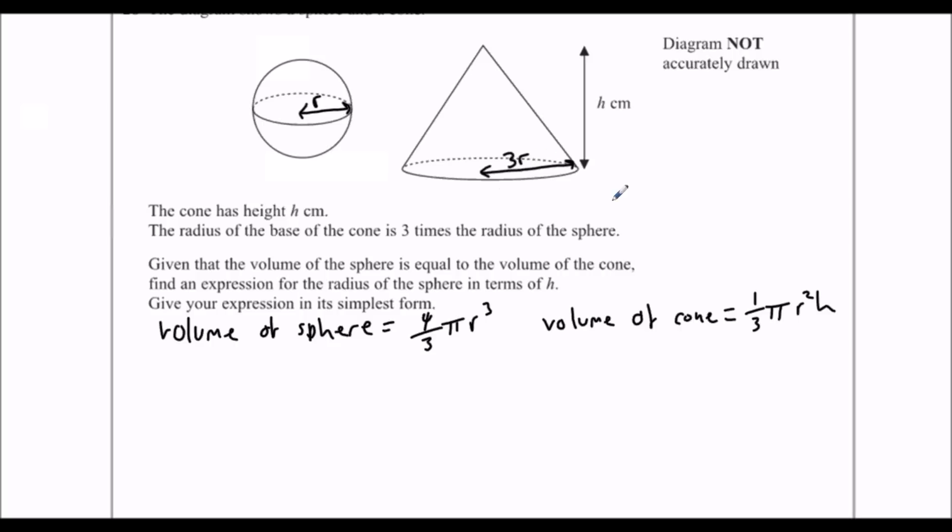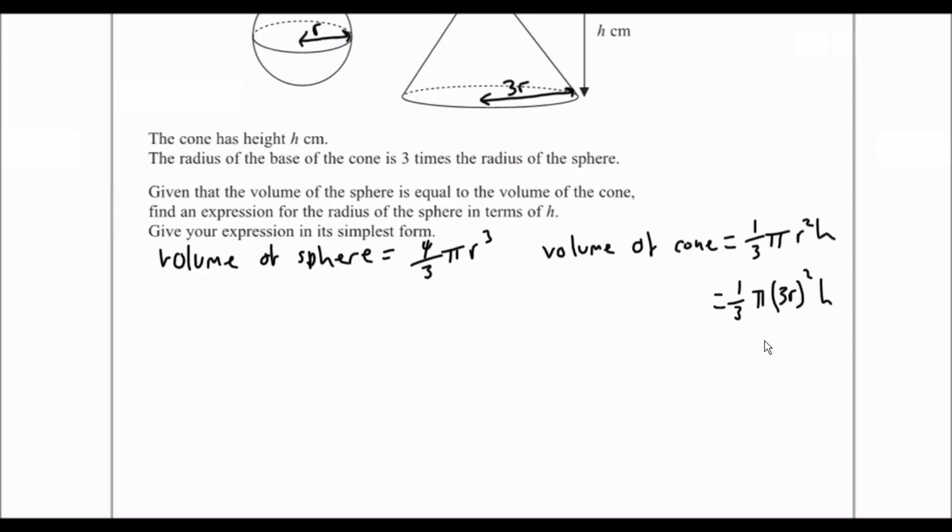r in the case of the cone is 3r. So we can leave this one as it is, and for this one, r is actually 3r. So the volume is 1 third π times 3r squared, all squared, times h.